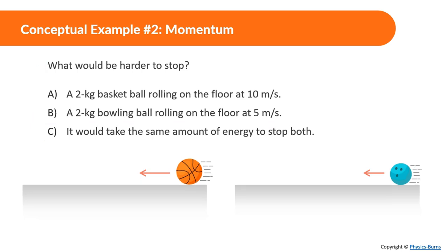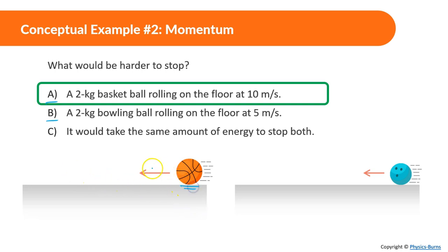Moving on. What would be harder to stop? A 2-kg basketball rolling on the floor at 10 m/s, or a 2-kg bowling ball rolling on the floor at 5 m/s. This is a bit more tricky. The answer is going to be A. The reason for that is even though this is lighter, it is going faster and it has more momentum. But how would you know it has momentum? We haven't talked anything about momentum. Well, we're going to be covering that right now.